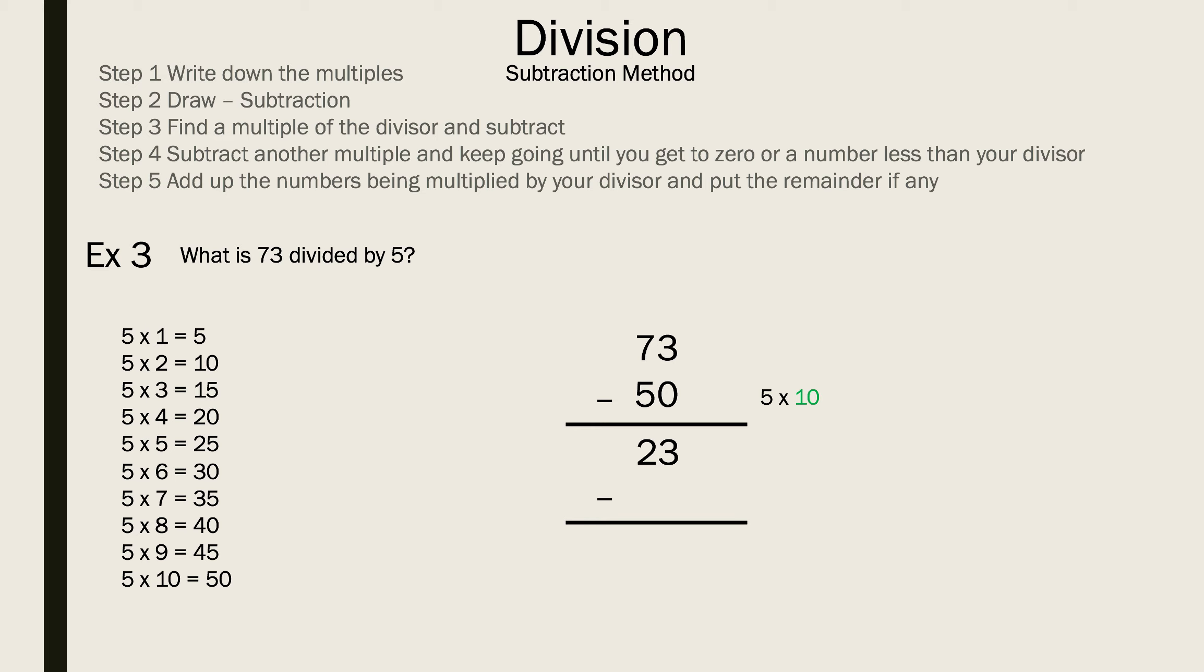Now we want to subtract another number, but we want to subtract a number that is less than 23 and that is closest. If you look at your multiples of 5, the closest one is 20 without going over. That is 5 times 4. We subtract and we get 3. Since 3 is less than 5, we can't go any further, so we're done with this question. Now we have to figure out the answer. We add the green numbers and we get 10 plus 4 is 14. We have to put the remainder, which is 3. And 14 remainder 3 is your final answer.